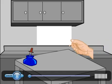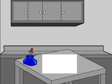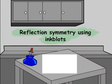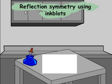Let's take a sheet of paper. Now with the help of this sheet, we are going to see how to create reflection symmetry using ink blots.